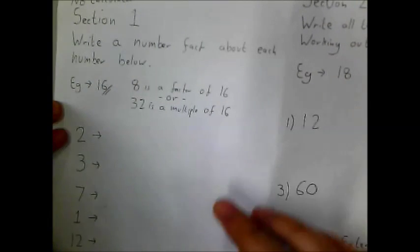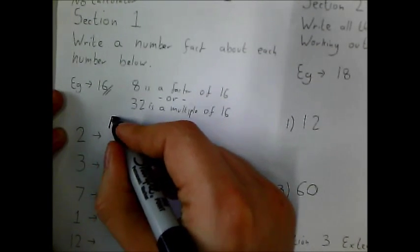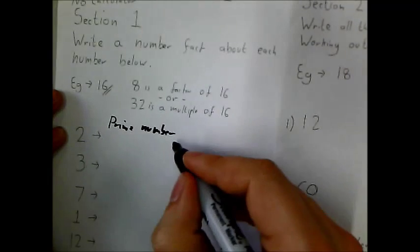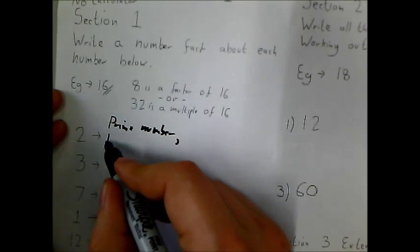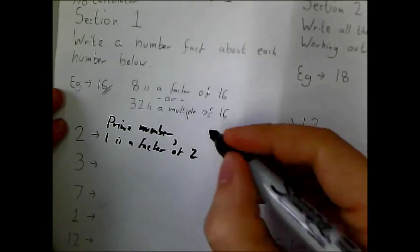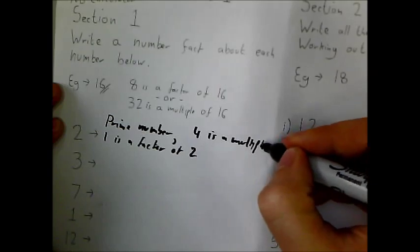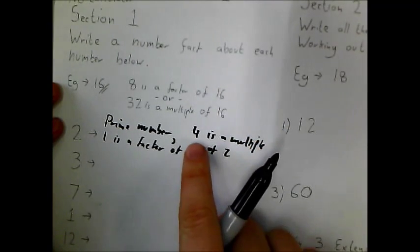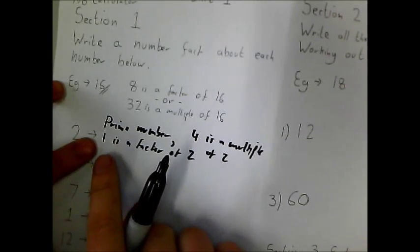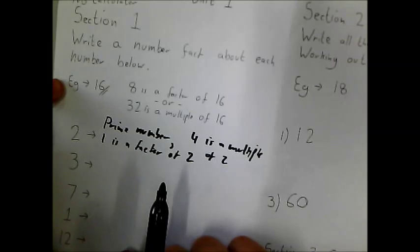Let's have a look at number 1, which is looking at number 2. Here we're looking for a number fact about 2. You might have said it's a prime number, which is absolutely true. You could have also said that 1 is a factor of 2. You might have said 4 is a multiple of 2. You could have also had 6, 8, 10, 12, etc. as a multiple of 2. But for factors, you could have only really had 1 as a factor of 2, or 2 as a factor of 2, as it's a prime number. It only has two factors.